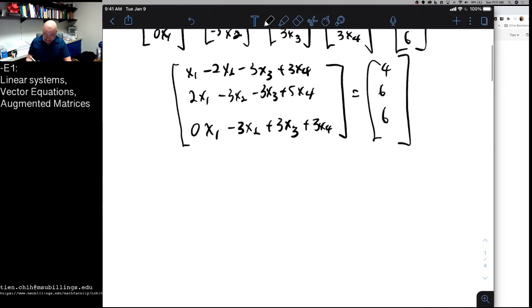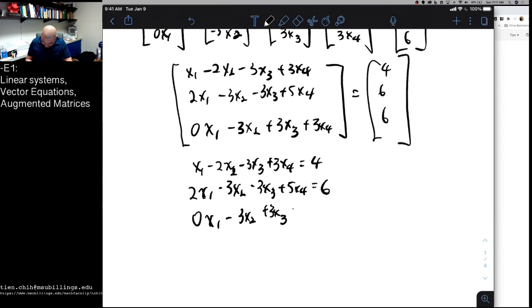And so this lets us say that x1 minus 2x2 minus 3x3 plus 3x4, that must be equal to 4. And so on with the other rows, and then 0x1 minus 3x2, 3x3 plus 3x4, that is 6 as well.